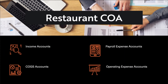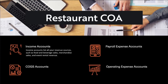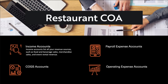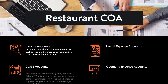Going a little bit deeper, the next things we can see are income accounts. These list all your revenue sources, such as food and beverage sales, merchandise sales, and event rental revenue. These categories should be broken down into as many subtypes as you have distinct sources of income.